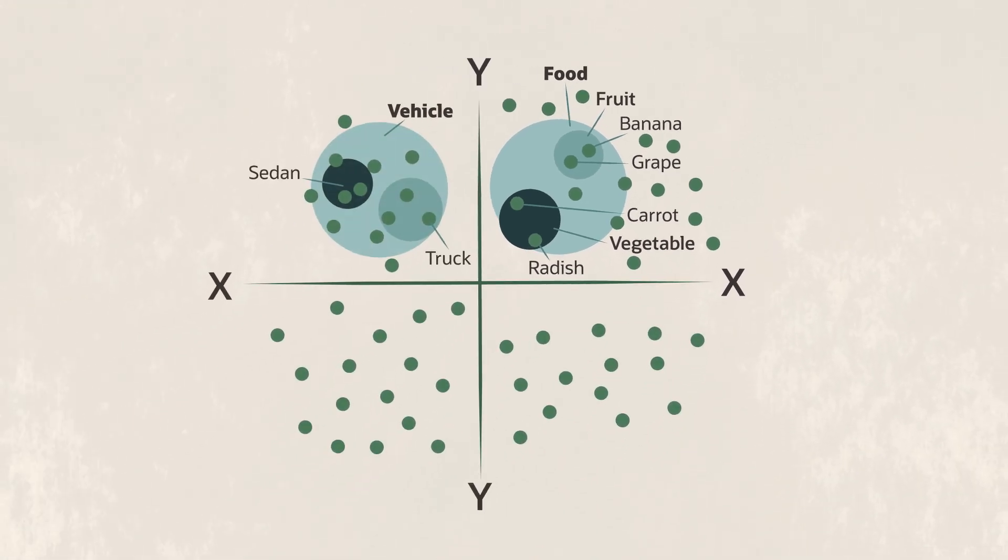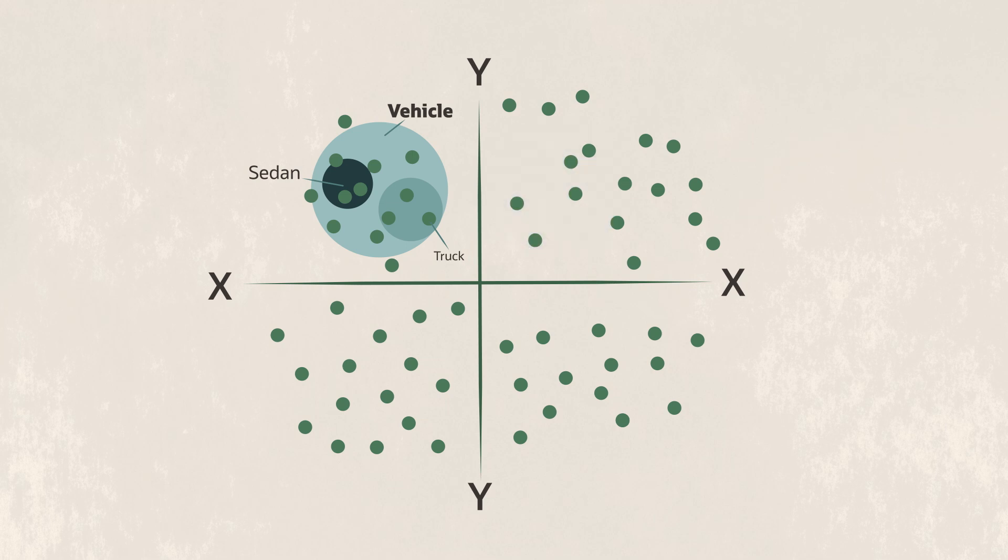In this case, the database can ignore embeddings for any object that is further away and focus on sedans. If you're searching for something orange, the colour orange vector for the car and the truck would have already been indexed close together in terms of colour, and the database would find them both quickly.